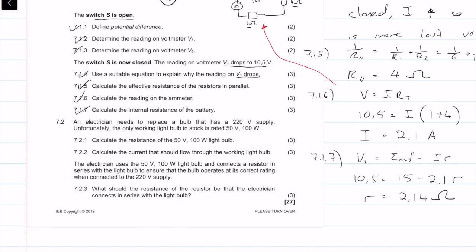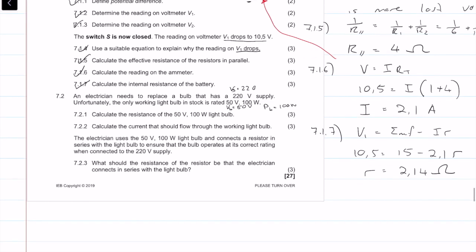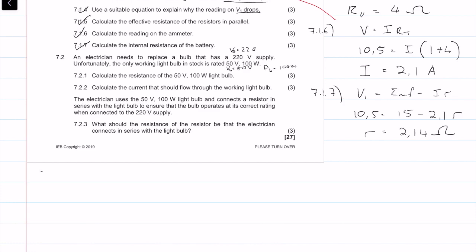Question 7.2: an electrician needs to replace a bulb on a 220 volt supply. The only working bulb in stock is rated at 50 volts and 100 watts. Question 7.2.1: calculate the resistance of the bulb. Using P = V²/R: 100 = 50²/R, so R = 25 ohms. We get three marks for that.